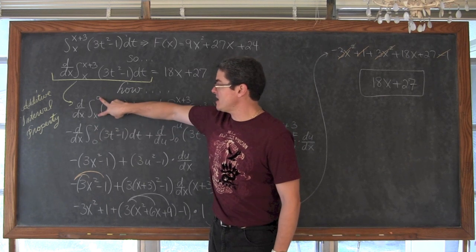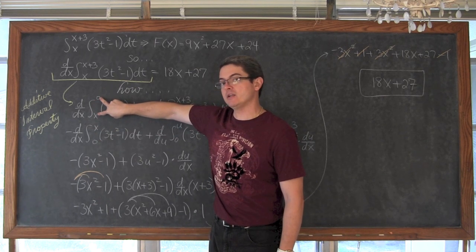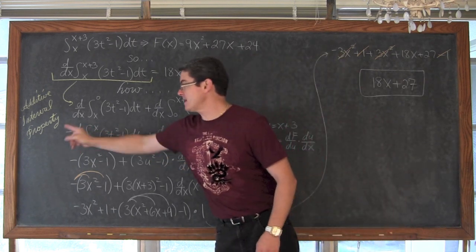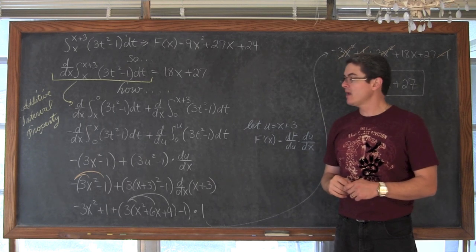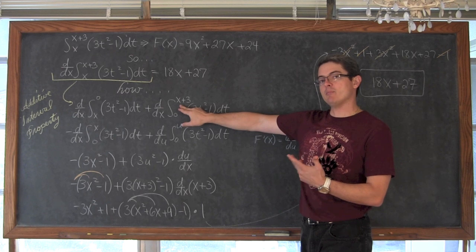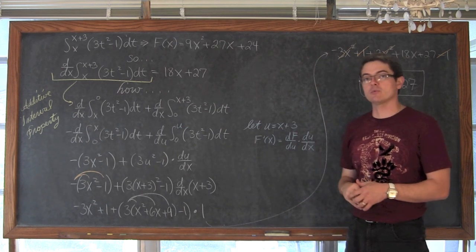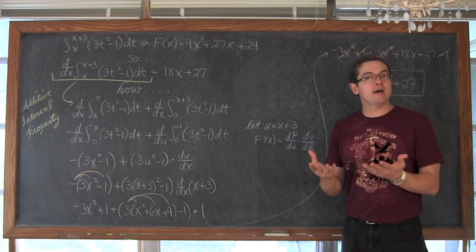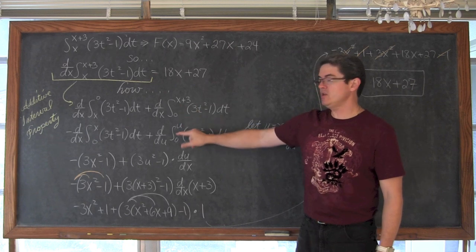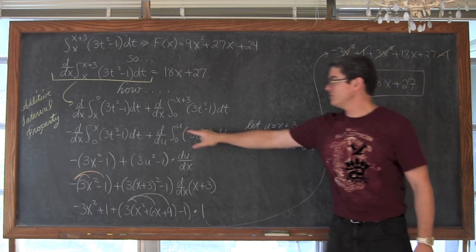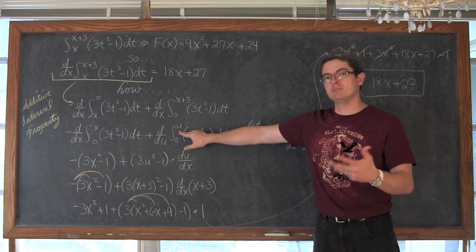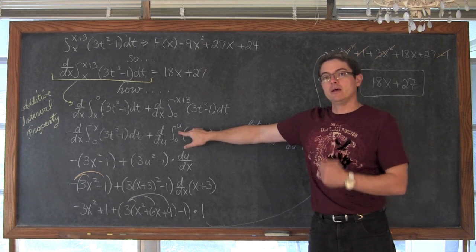I need the lower bound to be constant, so I take the lower bound and upper bound of my definite integral and swap them. By doing that I get the opposite answer from my definite integral — that is why this negative is here. In my second term I have a lower bound that is a constant, but my upper bound is the algebraic expression x plus 3. I need that to be a basic variable of x, as required by the second fundamental theorem of calculus, so I do a u-substitution and let u equal x plus 3. That allows me to rewrite the definite integral with u as my upper boundary.